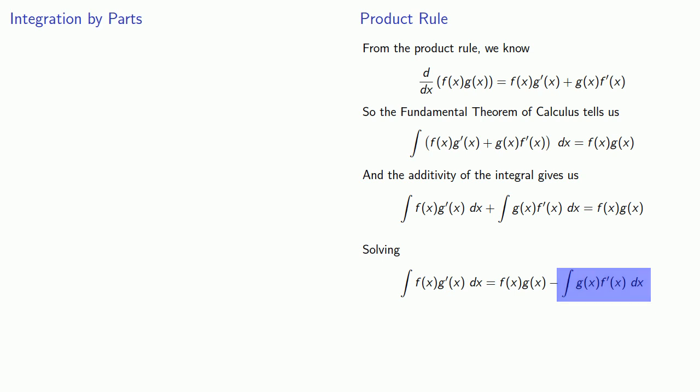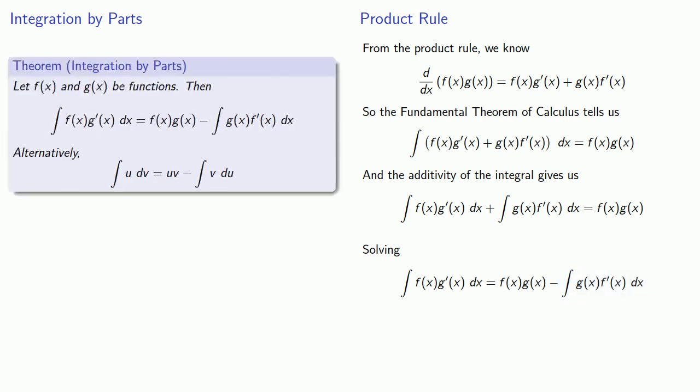That gives us a useful relationship. Let f(x) and g(x) be functions. Then the antiderivative of f(x)g'(x) is f(x)g(x) minus the integral of g(x)f'(x). In effect, we're switching the function that is differentiated.